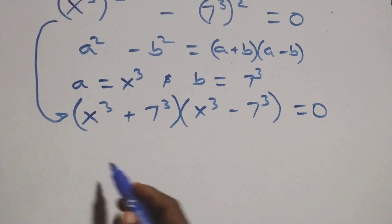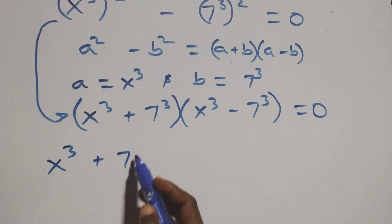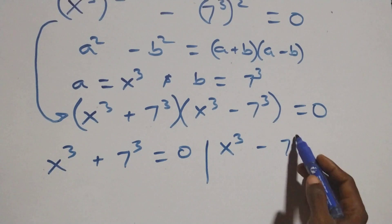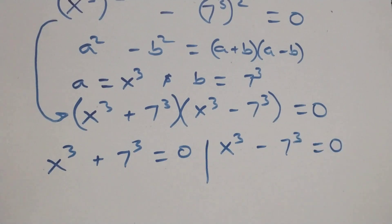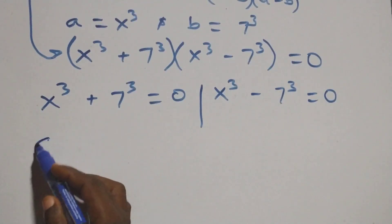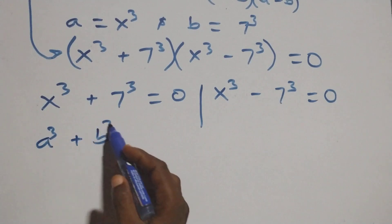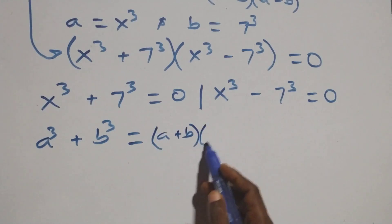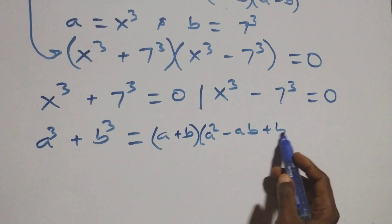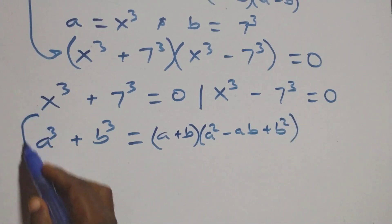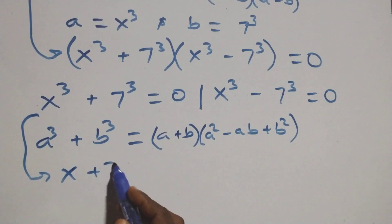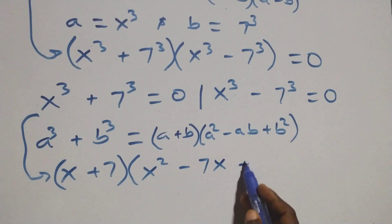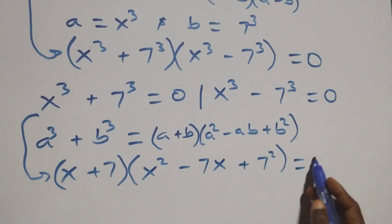Then here we have two possible cases. We first take x raised to the power 3 plus 7 raised to the power 3 equals to 0. This follows from a³ + b³, which is the same as (a + b)(a² − ab + b²). So here we have (x + 7)(x² − 7x + 49) equals to 0.